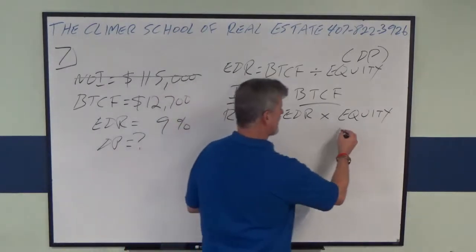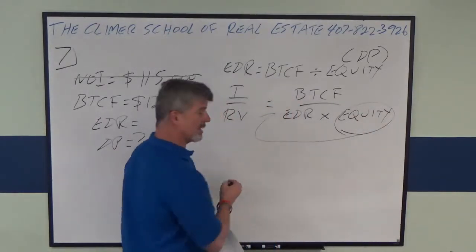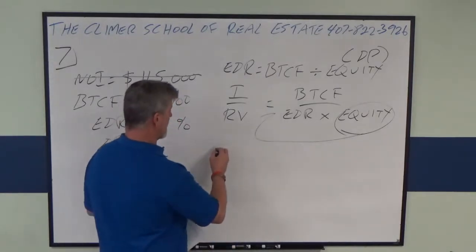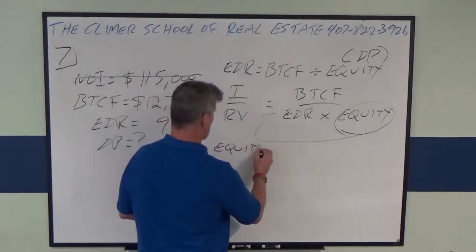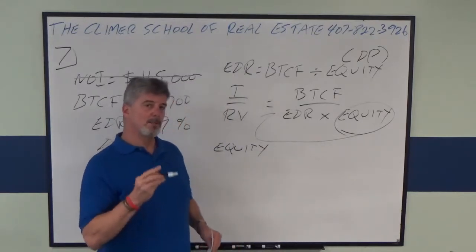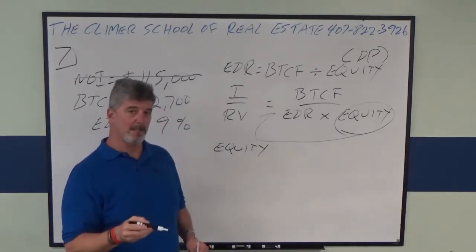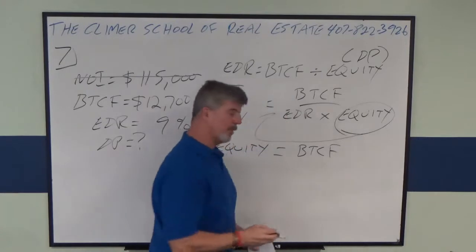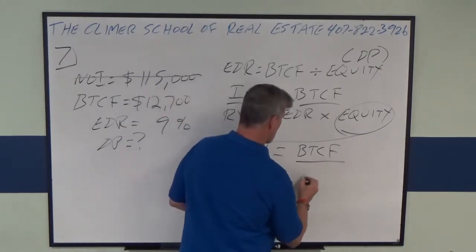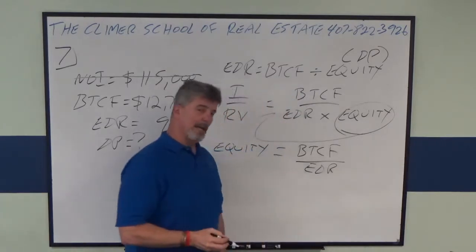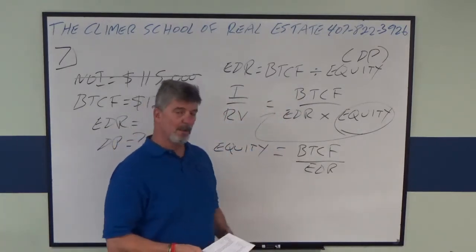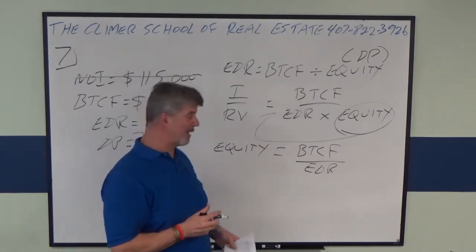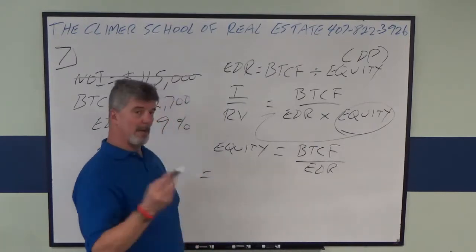Here's what I teach: take this — swing it over to the other side of the bridge, or canyon, or cliff, or whatever — so equity is all by itself. What do you have on the same side as you were standing? Before-tax cash flow divided by equity dividend rate. Now the problem gives us both numbers.